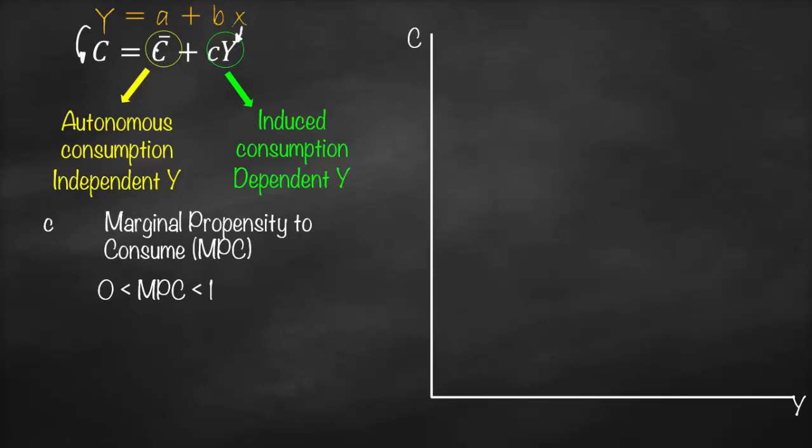The a here, or C bar, refers to our intercept, and b or little c refers to the slope. Since we have a positive c, we have a positive slope. So I would draw here a positive slope, and I will not start from zero. I will start from a positive value because we have the intercept, which is our C bar, our autonomous consumption.